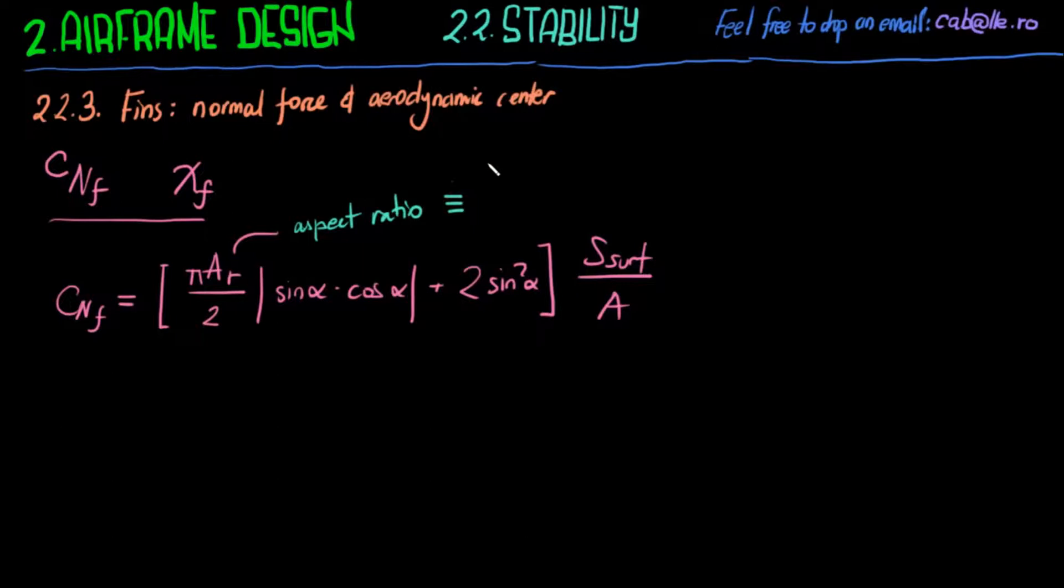This is the aspect ratio of the fins, and it is defined as the span squared divided by surface of the fins. What is the span? Careful in this one because depending on the literature they define it in different ways. Span—this is a semi-span.